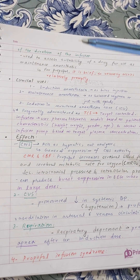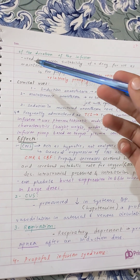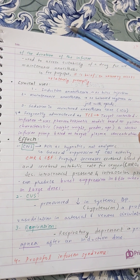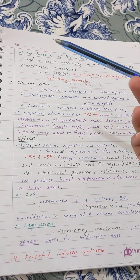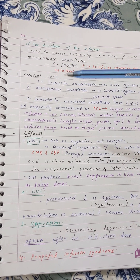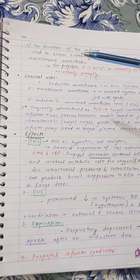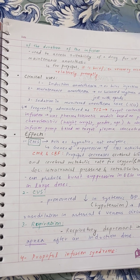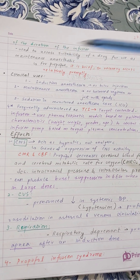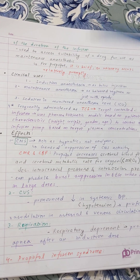Context-sensitive half-life is used to assess the suitability of a drug for use as a maintenance anesthetic. For IV anesthetics, we give a bolus for induction but also need a maintenance dose. We need an agent whose context-sensitive half-life is brief, so that recovery occurs promptly after the infusion is stopped.